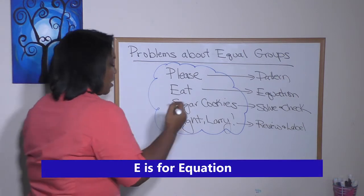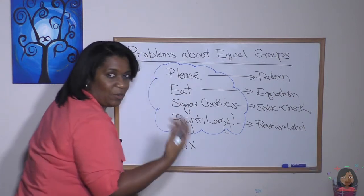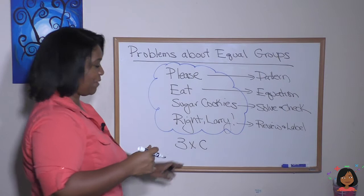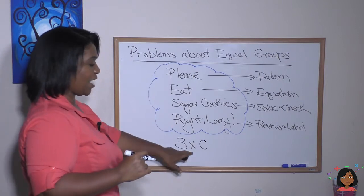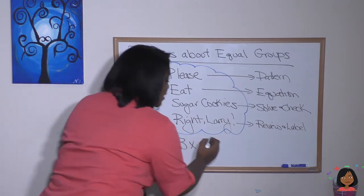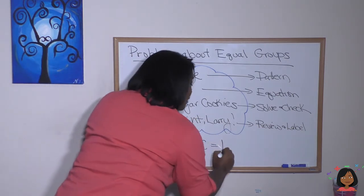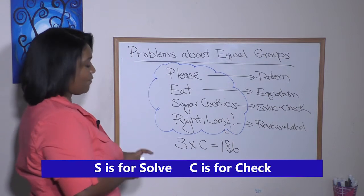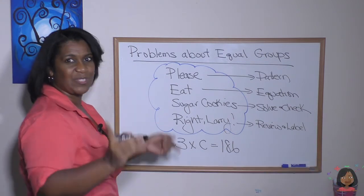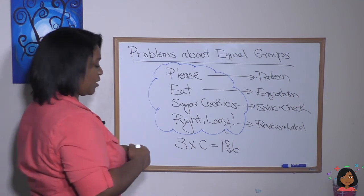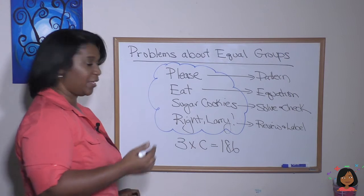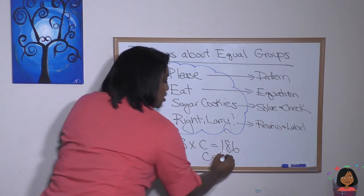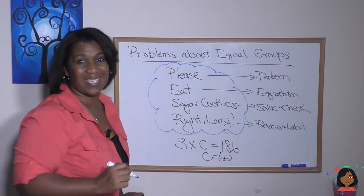E is for equation. We know three groups times how many Oreos in each pack — we don't know that, so I'm going to write C for cookies. How many Oreos were there total? 186. Now for sugar cookies — solve and check. We have a missing number in multiplication, which means we do the opposite to find it, which is divide. So we're going to divide 186 by three. Three goes into 18 six times, three goes into six two times — so there were 62 cookies in each pack.